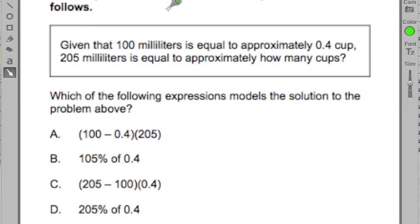Use the problem below to answer the question that follows. And they give this portion of the problem in a box. Given that 100 milliliters is equal to approximately 0.4 cups, 205 milliliters is approximately how many cups. Then it says, which of the following expressions models the solution to the problem above? And it gives us a bunch of answer choices.